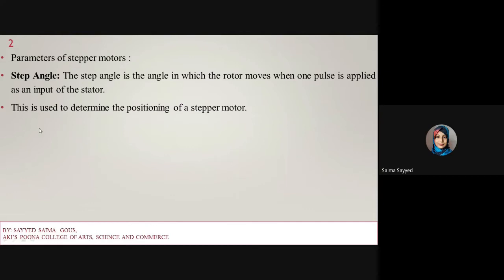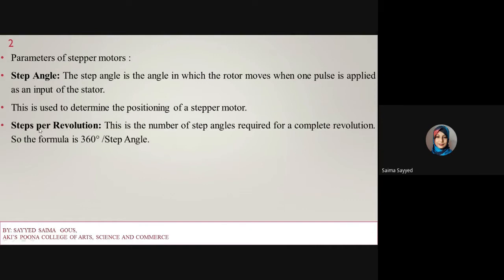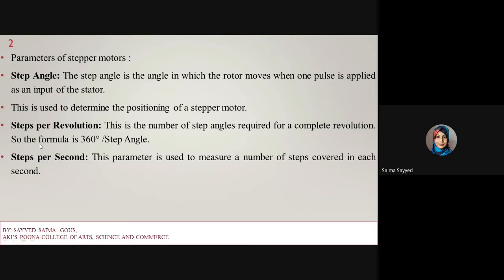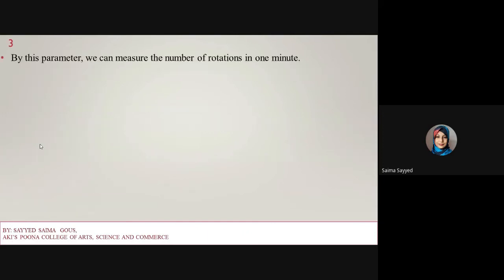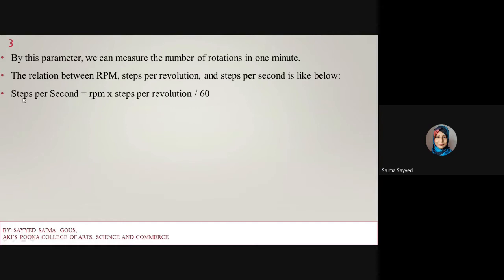Step angle is used to determine the position of the stepper motor. The next parameter is steps per revolution, which is the number of step angles required for a complete revolution. The formula is 360 divided by step angle. Then steps per second measures the number of steps covered in each second. RPM, revolution per minute, measures the frequency of rotation. The relationship is: steps per second equals RPM multiplied by steps per revolution, divided by 60.